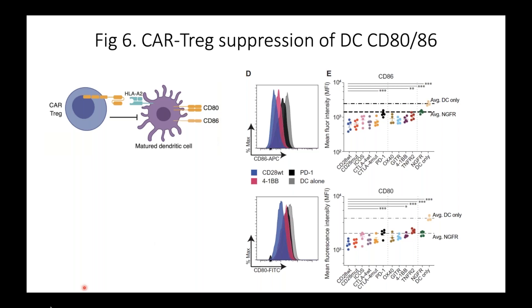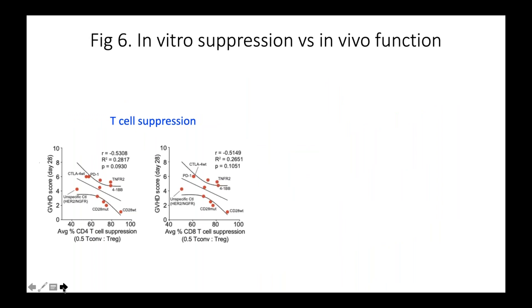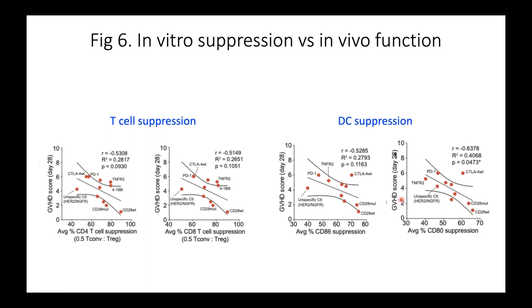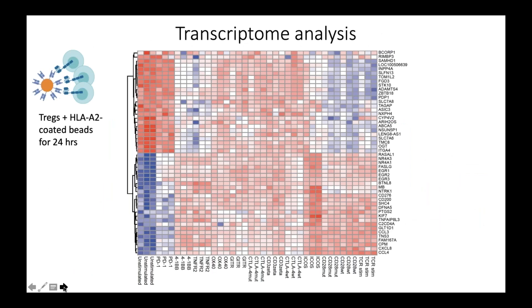It seemed like the results of this assay were better predictive of what was going to happen in vivo in the mice. When we tried to quantify that, we ended up using the graft versus host disease score as the metric at day 28. There is a significant correlation when we compare the amount of suppression of GVHD to the amount of CD80 suppression. You can see there's a good correlation between poor CD80 suppression and poor ability to prevent graft versus host disease.